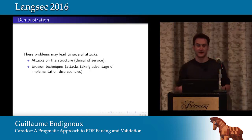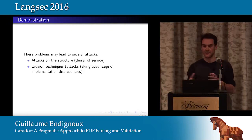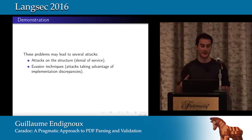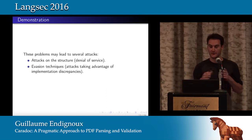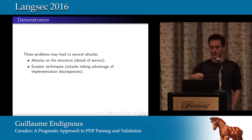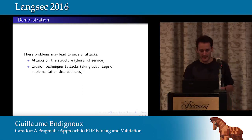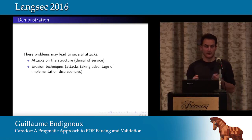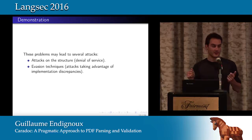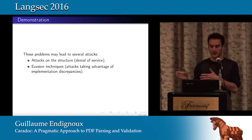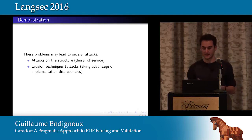These two examples show that problems in parsers can lead to several attacks. The first would be a direct attack on the structure — for example, a denial of service, since the parser loops forever. Then you can have evasion techniques, taking advantage of implementation discrepancies to evade a malware detector and target only, for example, the Adobe Reader you want to attack.